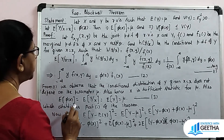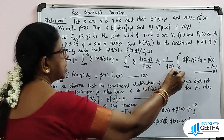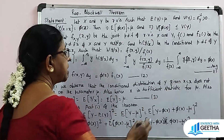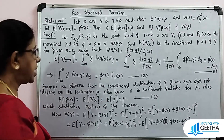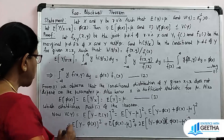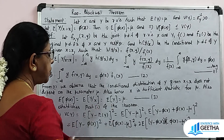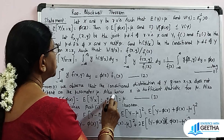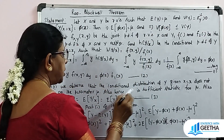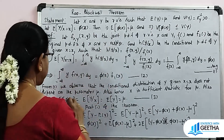From equation 1, the conditional distribution of Y given X = x does not depend on the parameter μ, so X is a sufficient statistic for μ. Considering E[π(X)] = E[E[Y | X]] = E[Y] = μ. So E[π(X)] = μ, which is equation 3. This completes the proof of part 1.